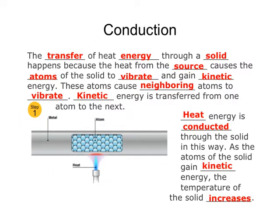Look at this picture of a metal pipe. Everything is made up of atoms, shown here. We have a heat source heating the metal pipe at one point. Those atoms start to move faster as they're heated up, and they bump into the molecules next to them on either side. Those molecules gain kinetic energy, move faster, and bump into the ones next to them — and so on down the tube on both sides — until the whole tube is the same temperature. So heat is conducted through this solid as the atoms gain kinetic energy, and the temperature of the solid increases through conduction.